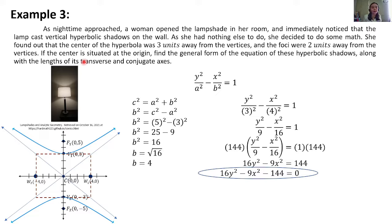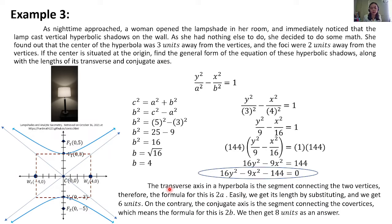Hinahanap din sa atin yung lengths ng transverse and conjugate axis. The transverse axis is the segment connecting the two vertices, so the formula is 2a = 2(3) = 6 units. The conjugate axis is the segment connecting the co-vertices, so the formula is 2b = 2(4) = 8 units. The length of the transverse axis is 6 units and the length of the conjugate axis is 8 units. Sana naiintindihan natin yung ating third example. Proceed naman tayo doon sa ating fourth example.